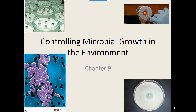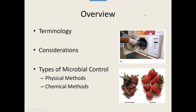Chapter 9 is all about controlling microbial growth in the environment. We'll go over some basic terms, considerations on how to choose a method to control microbial growth, and then the types of microbial control. There are physical ways we can control microbes and chemicals we can use as well, and we'll discuss what to choose and when.